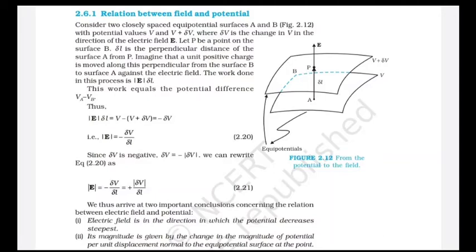A unit positive charge is moved along the perpendicular from surface B to surface A against the electric field. The work done is dW = E·δl, where δl is the perpendicular distance between the surfaces. This work equals the potential difference: Va − Vb = V − (V + ΔV) = −ΔV = E·Δl.